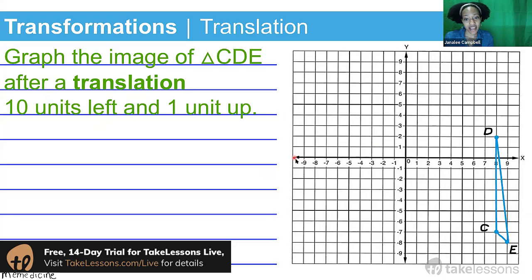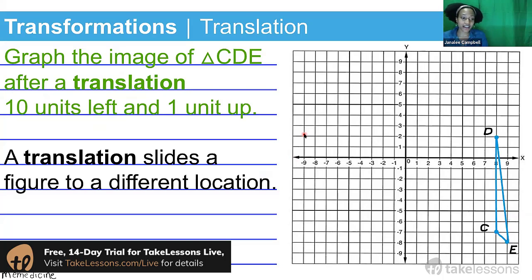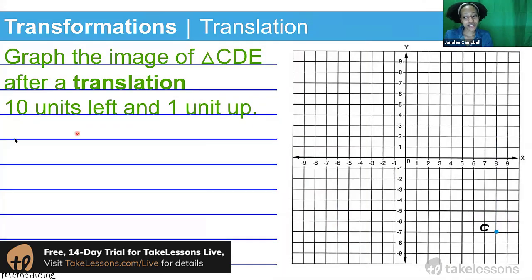Okay, so a translation basically slides a figure to a different location. You're just basically going back and forth, up or down—you're shifting your position. Alright, so we're going to start off with point C.